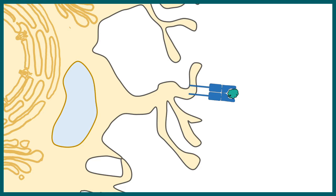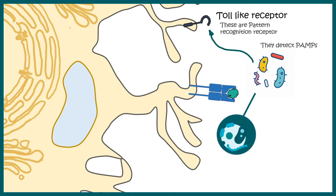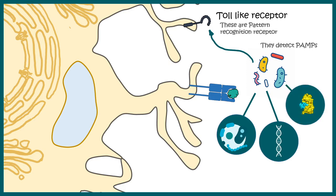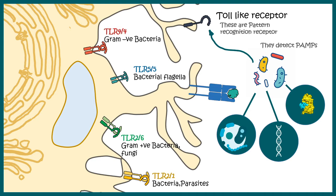Before a dendritic cell can display a pathogen-derived antigen, it has to understand that it's a pathogen, and that is done with the help of pattern recognition receptors. One of them is toll-like receptors, which detect PAMPs — pathogen associated molecular patterns — which could be bacterial proteins, DNA, or other kinds of molecules. There are quite a lot of TLRs present on the dendritic cell: TLR 1 and 2 are responsible for detection of bacteria and parasites; TLR 2 and 6 for gram-positive bacteria and fungi. These TLRs can homodimerize and heterodimerize. Homodimer TLRs include TLR 5, which detects bacterial flagella, and TLR 4, which detects lipopolysaccharide from gram-negative bacteria.